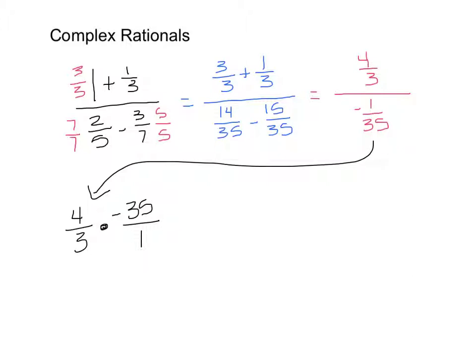Now we can multiply the numerators, multiply the denominators, and we're done. I have 4 times negative 35, which is negative 140, over 3 times 1, which is 3. Sometimes this simplifies, but in this case these numbers don't simplify any further. This improper fraction, negative 140 over 3, is our final answer.